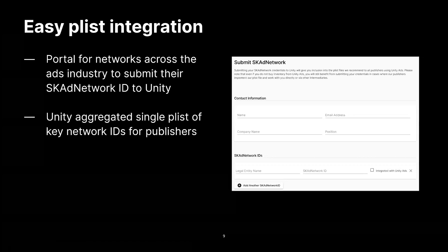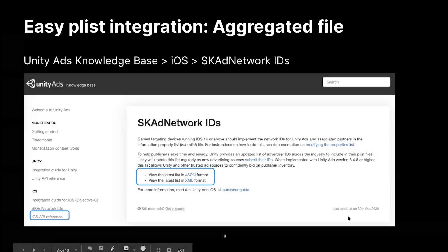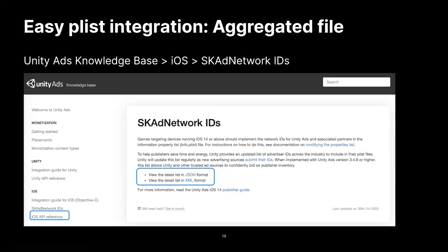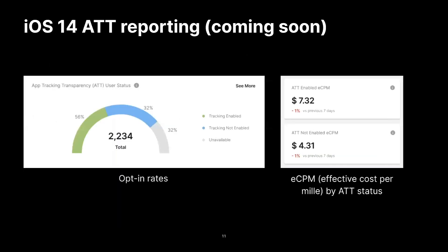If you're a partner from a network and you want to submit your SK Ad Network ID to Unity for our plist, you can do so on the Unity Partner Portal. For publishers looking to access the aggregated file, it can be easily found in the Unity Ads knowledge base in the iOS section under the SK Ad Network subsection. Finally, a new feature we're working on coming soon will support reporting on ATT opt-in status. Specifically, we're looking to provide an idea of CPM for users with ATT enabled versus not, to help publishers evaluate revenue impact of the different segments.